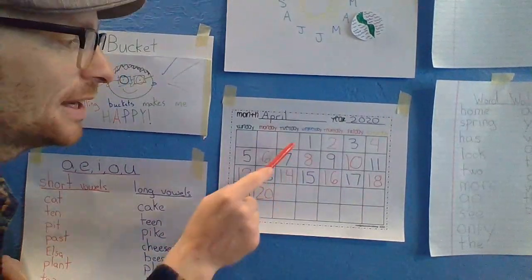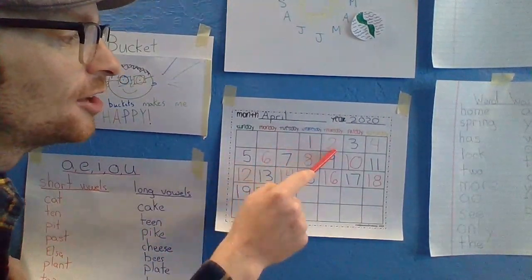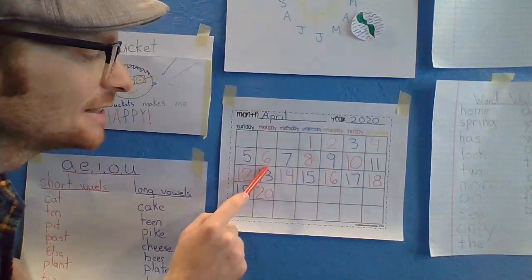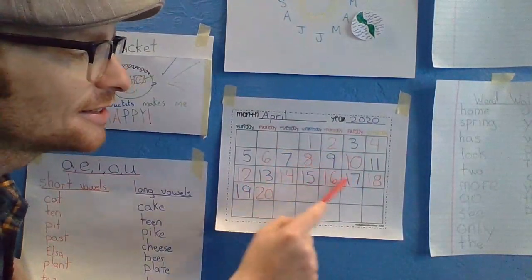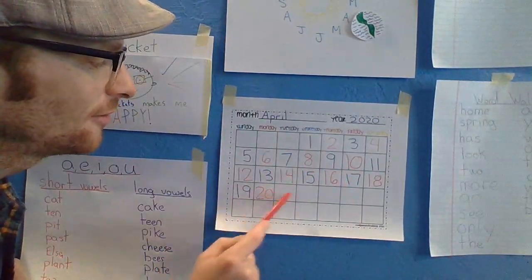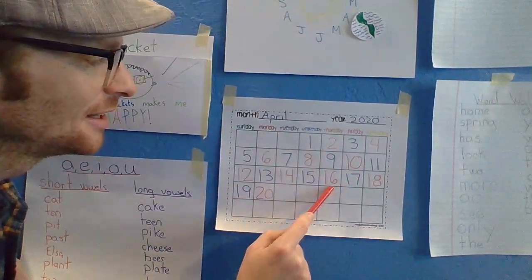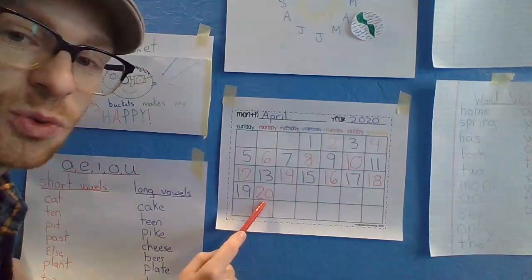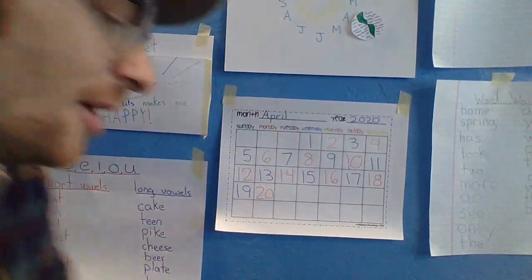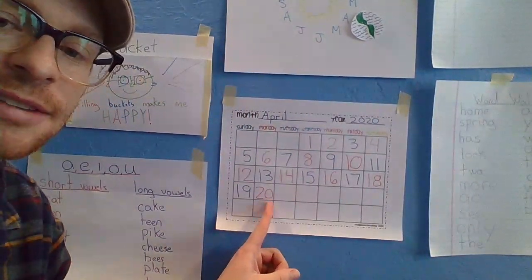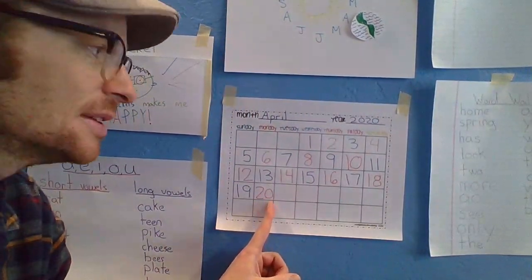So let's count by twos. Count with me. Two, four, six, eight, ten, twelve, fourteen, sixteen, eighteen, twenty. Wow, that's pretty cool. We counted by twos to twenty because twenty is even — it ends in a zero, which means it's even.